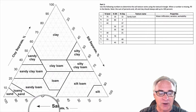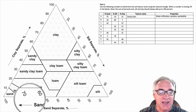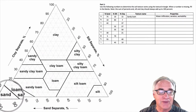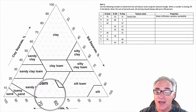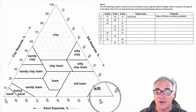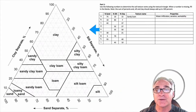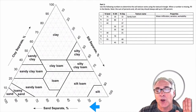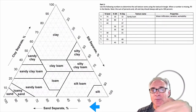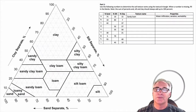And then lastly, when we take a look at the sand separate, it's going to start on the left-hand side at 100% and work back over to 0%. So when we are reading this, I just want you to keep in perspective: clay, silt, and then sand.